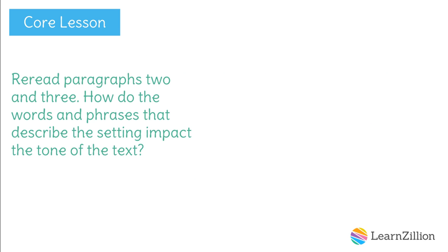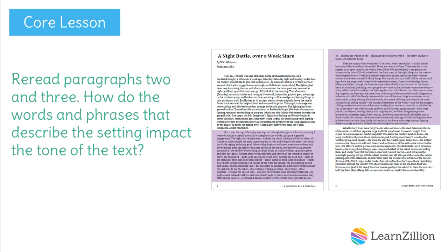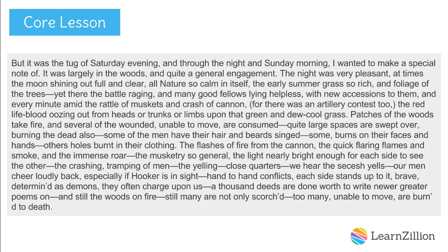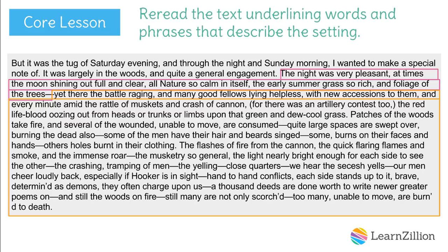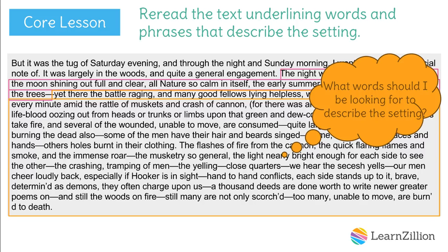So reread paragraphs two and three. How do the words and phrases that describe the setting impact the tone of the text? For this question, I'm focusing my attention on the middle section where Whitman describes the battle in the woods and the camps of the wounded soldiers. We already know there are two settings: the battle in the woods and the nature and night sky. So I'm going to reread the text underlining words and phrases that describe these settings. But what words should I look for to describe the setting?